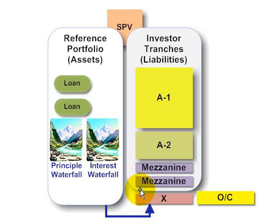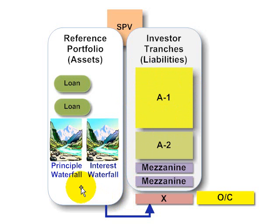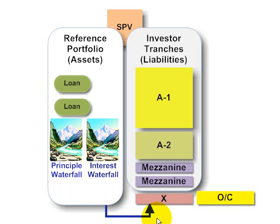We can speak of subordination as a key part of the structuring that gives a credit enhancement to the senior tranches, because according to the rules, losses on the mortgage pool — just think about defaults and delinquencies on these mortgage loans — those losses are going to first be applied to the junior tranches. So it's in bottom-up fashion.